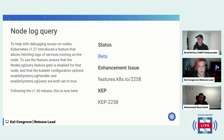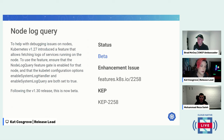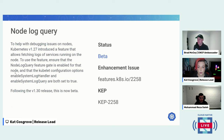Now we're into the betas. Beta features are enabled by default most of the time but can still be disabled with a feature flag, whereas stable enhancements usually cannot be disabled. The first beta in this version is node log query. To help with debugging issues on nodes, Kubernetes 1.27 introduced a feature that allowed fetching logs of services running on the node. To use it, ensure that the NodeLogQuery feature gate is enabled for that node, and that the kubelet configuration options enableSystemLogHandler and enableSystemLogQuery are both set to true. With 1.30, this graduates to beta.